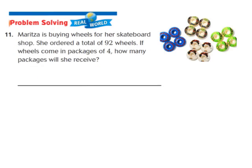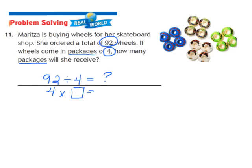Let's take a look at question number 11, another real-world problem-solving question. Maritza ordered a total of 92 wheels, and the wheels come in packages of 4. They want to know how many packages she will receive. So I'm dividing 92 by 4. My first step is to write a related multiplication sentence: 4 times blank equals 92.